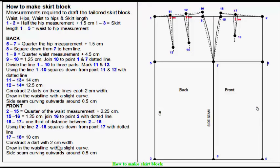Construct a dart with 2 cm width. Draw in the waistline with a slight curve. Side seam curving outwards around 0.5 cm.